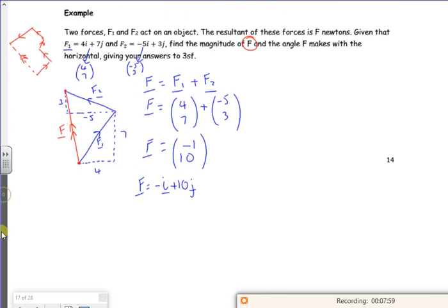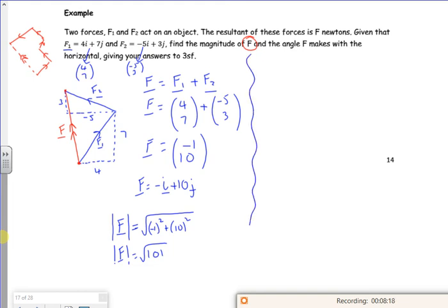Technically because my question started off in component form I should really put it in component form. Now it wants the magnitude, so if I just do Pythagoras, remember the modular sign, that's what you use to show that you're doing Pythagoras with a vector. So that's going to give me root 101, which is roughly, it's to three sig fig, 10.0 newtons to three sig fig.